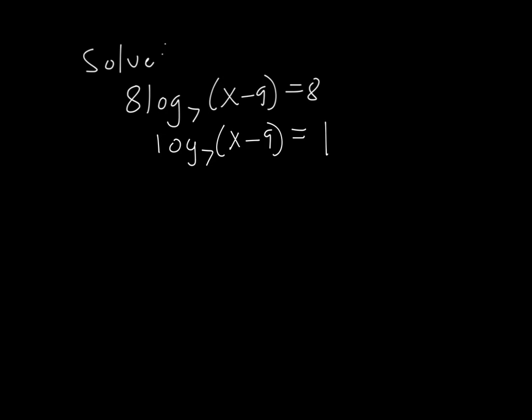Once you get down to that part, once you have it to where it's just the log part is here and there's no extra stuff anywhere, it's just that part, then we're going to use the definition of log. The definition of log is that the base of the log to this power over here will equal this thing over here. So we're going to write 7 to the first power equals x minus 9. And then all we're going to do now is that's obviously that's 7 equals x minus 9. And then I'm going to add 9, get 16. That's it.